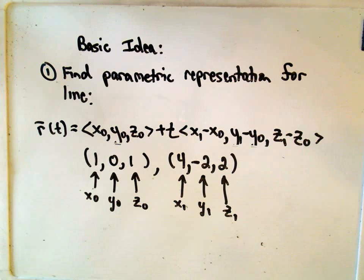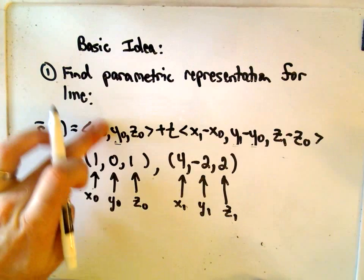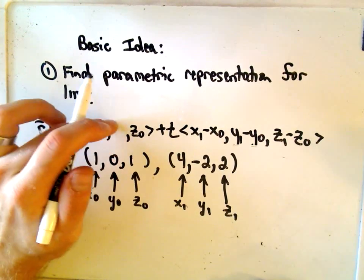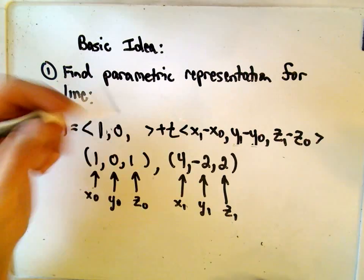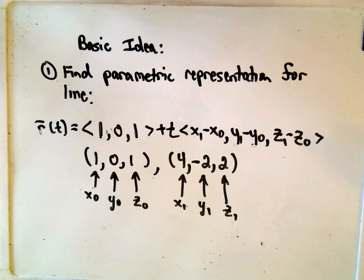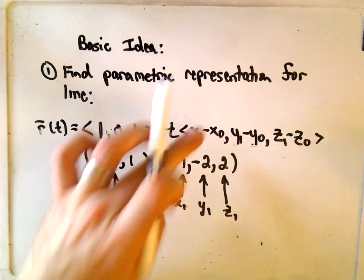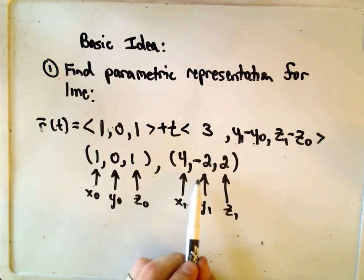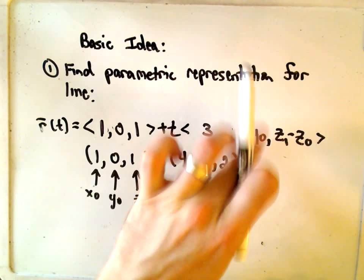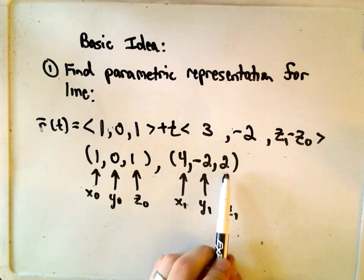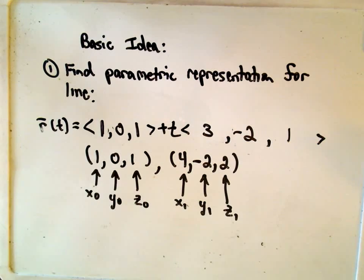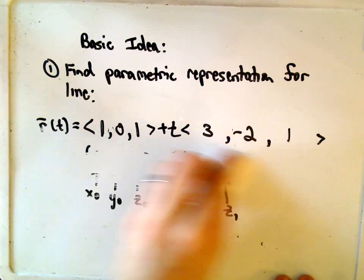So again, now it's just a matter of plugging all these values into this equation. So x-naught is 1, y-naught would be 0, our z-naught is also 1. We leave the t alone and then we simply have to subtract them. So we would take 4 minus 1, that would give us 3. We would take -2 minus 0, so that'll just give us -2. And then we would take 2 minus 1, which would simply give us 1. So let's clean this up.